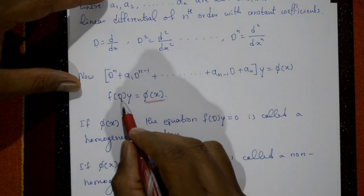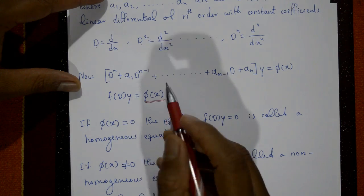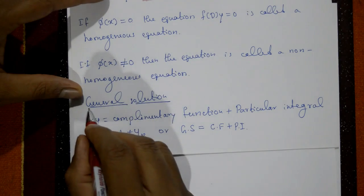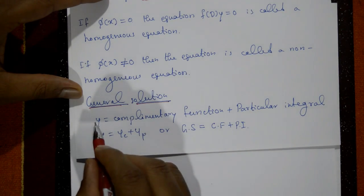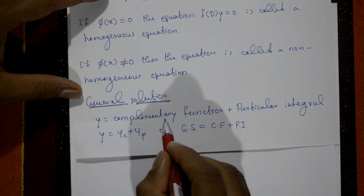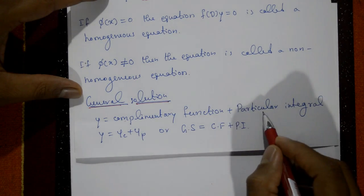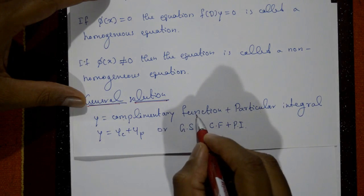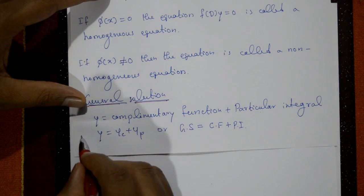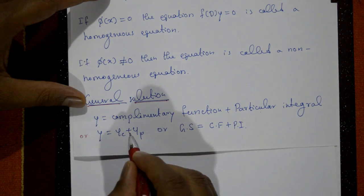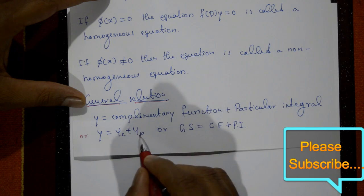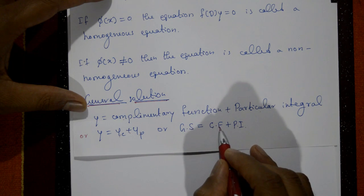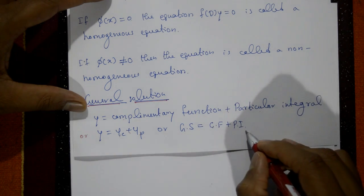The general solution is y equals complementary function plus particular integral. First we find the complementary function, then the particular integral. We write this as y equals yc plus yp, where yc means complementary function and yp means particular integral. This is the complete solution.